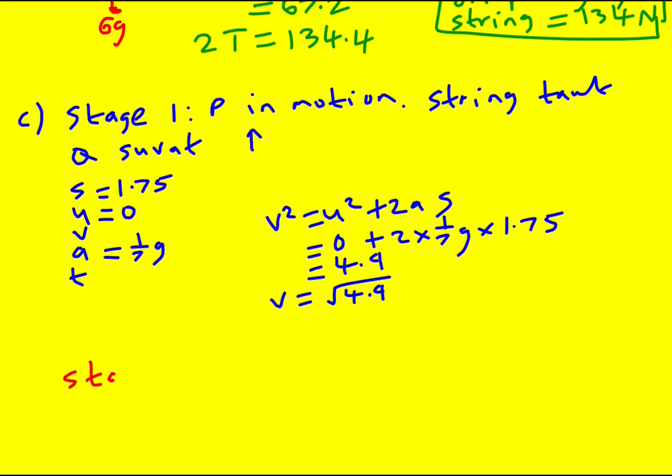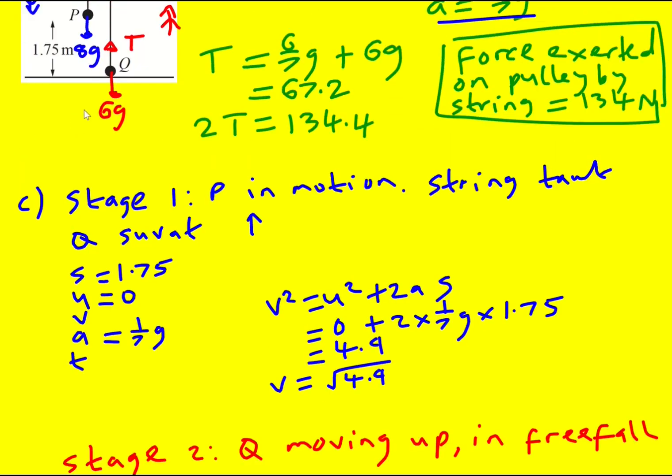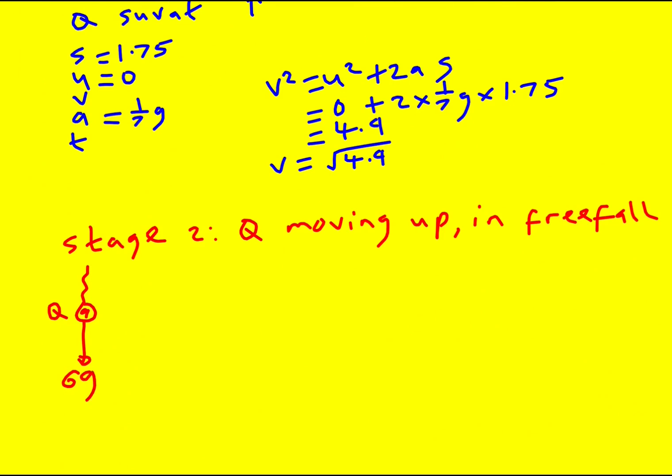On to stage two. So Q is now, Q is moving up still but in freefall. I know that might seem a bit confusing, it's not actually falling. But it's, you know, it's only experiencing gravity. So we've got Q here and the only force on it because there's a string here but it's like actually now it's like loose. So we've got 6G. And when you apply F equals MA if you do this you'll find that A is actually equal to G. So it's now accelerating downwards. It's moving up, that's motion going up but accelerating downwards.